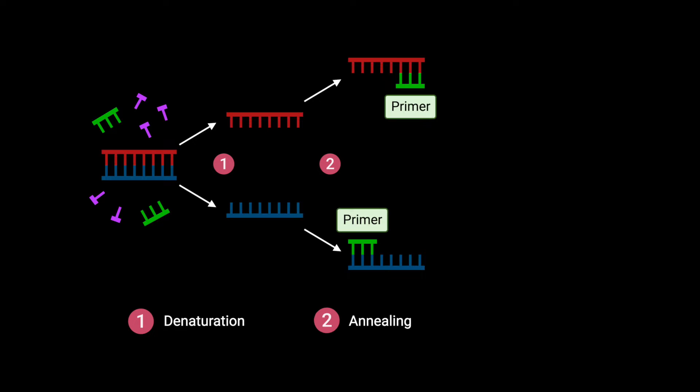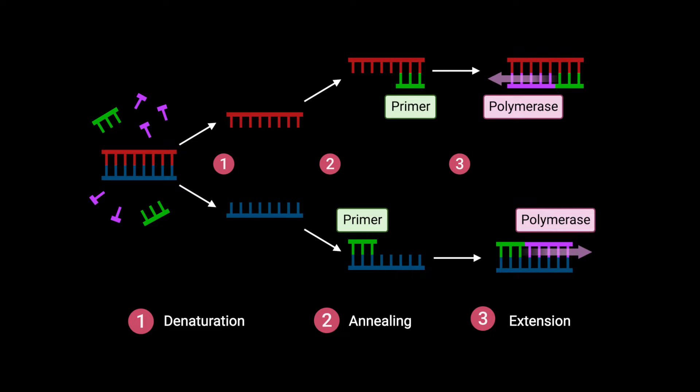qPCR allows for amplification and subsequent measurement of gene expression. First, the DNA is denatured with high temperatures. Then, the DNA is cooled and primer is attached to the appropriate DNA sequence. Last, the DNA is slightly warmed and DNA polymerase catalyzes DNA extension.